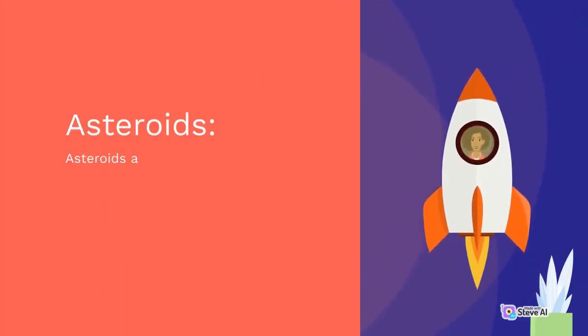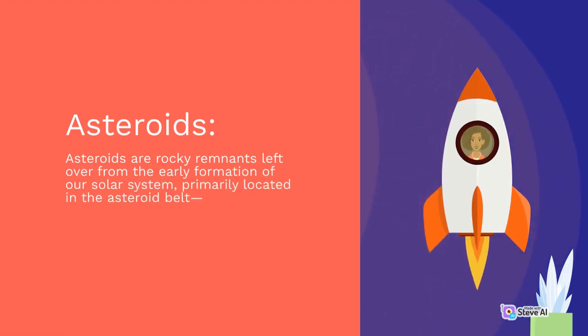Asteroids are rocky remnants left over from the early formation of our solar system, primarily located in the asteroid belt, a region between Mars and Jupiter.